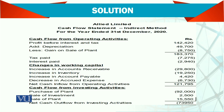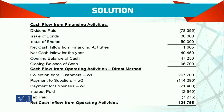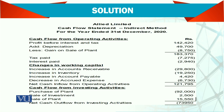Cash flow from operating activity — in the indirect method, as I said, we have to start with the profit before interest and tax. We need to find out from the income statement what the profit before tax and interest is. Sometimes we are not given that figure clearly, so we need to make some adjustments about interest and tax. Then add back depreciation, and deduct the gain.